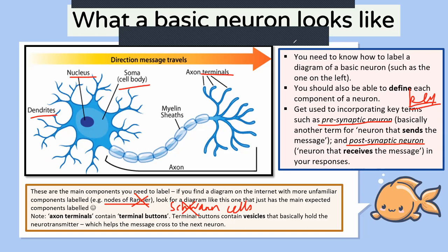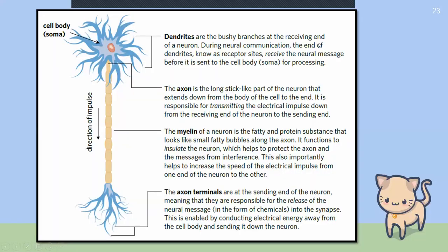You need to be able to label a neuron like this, which I think we've done many times in year 11 unit one and two psychology. Those of you in year 11 this year, or who were in year 10 previously, have covered this there as well.